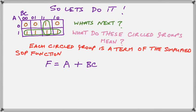For each circled group is a term of the simplified SOP function. So therefore, one of those circled groups is A, and the other circled group is BC. There they are shown.